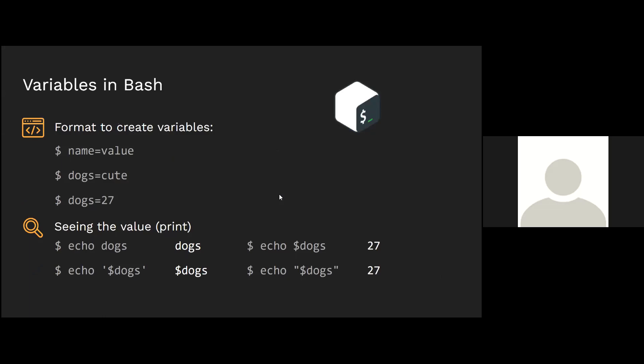Like in Python, when writing variables in Bash you do not need to declare the type. To create a variable, type the name, followed by the equal sign, then the value. For example, assigning the string 'cute' to the variable named dogs. You can reassign variables and change the type — the same applies for Bash. Bash is also similar to Python in that variable names are case sensitive. To see the stored value, use the echo command: to print the variable name itself, use the format on the left; to print the value, add a dollar sign before the variable name — that's how the program distinguishes it as an actual variable.